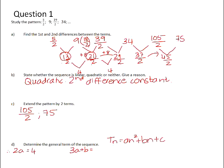3a plus b will be equal to the first first difference, which is 13 over 2. And a plus b plus c will be equal to the first term, which is 5 over 2.